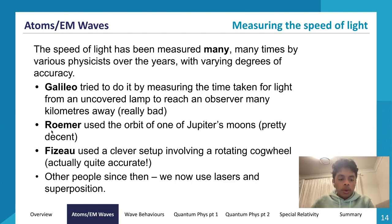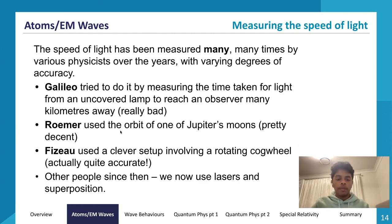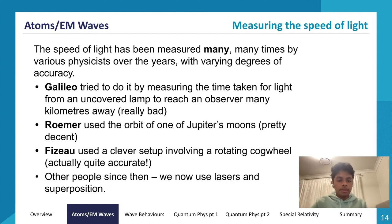Rømer used the orbit of one of Jupiter's moons. As Earth moves further from Jupiter, the observed time for the moon's eclipse is longer. He used that time difference — about 11 minutes — combined with his estimate of Earth's diameter to calculate the speed of light. His limitation was the inaccuracy of the then-known dimensions of Earth's circumference.